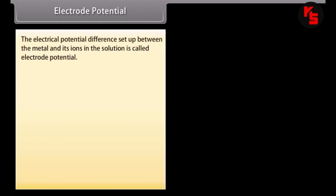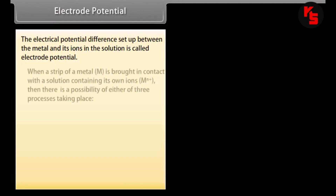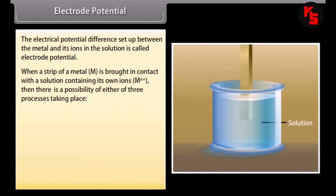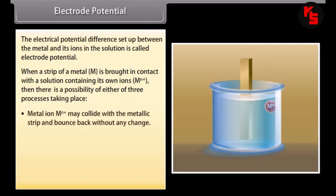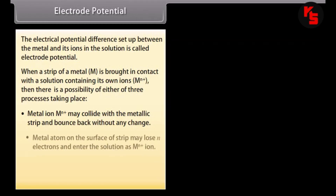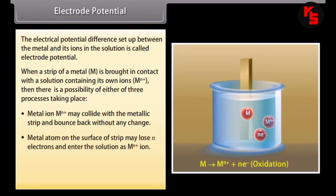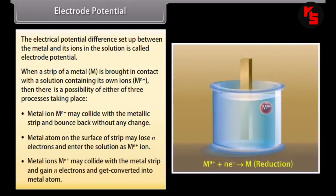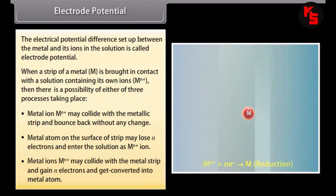Electrode potential. The electrical potential difference set up between the metal and its ions in the solution is called electrode potential. When a strip of metal is brought into contact with a solution containing its own ions, there is a possibility of one of three processes taking place: metal ions may collide with the metallic strip and bounce back without any change; a metal atom on the surface of the strip may lose n electrons and enter the solution as ions; or metal ions may collide with the metal strip, gain n electrons, and get converted into metal atoms.